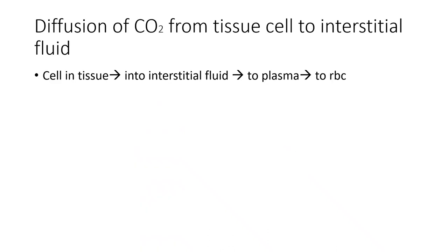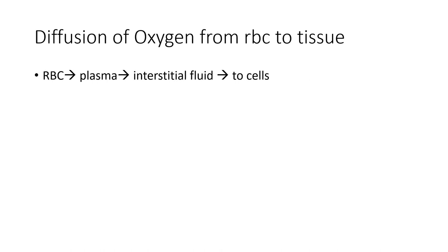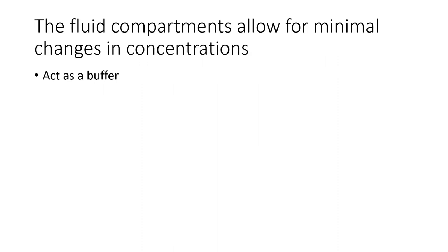Looking at the diffusion of carbon dioxide from tissues: tissues produce carbon dioxide by breaking down sugars and other molecules. It goes into the interstitial fluid, then to the plasma, where it may bind to red blood cells which convert it to carbonic acid, binding the hydrogen and releasing bicarbonate back into the plasma. For oxygen in active tissue, we have high levels of oxygen in red blood cells; it moves into the plasma, then from plasma to interstitial fluid, and then into cells, so there isn't a massive change within the intracellular concentration.